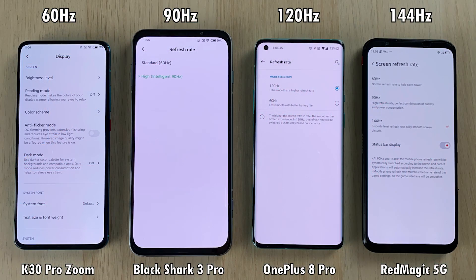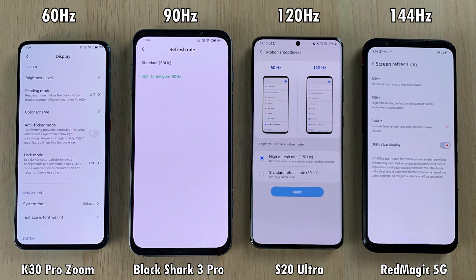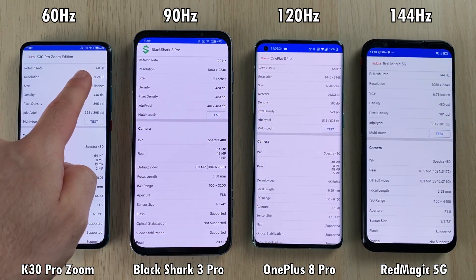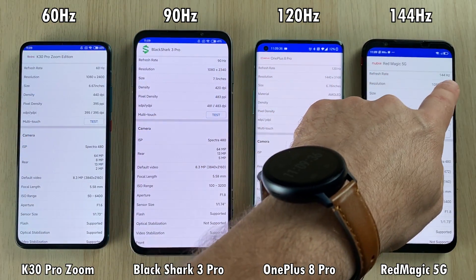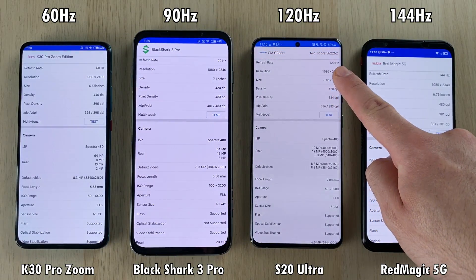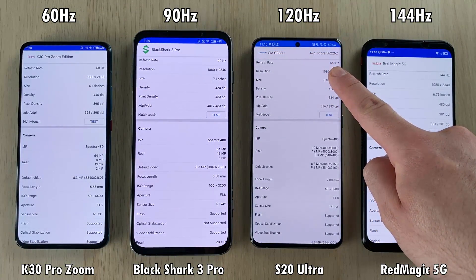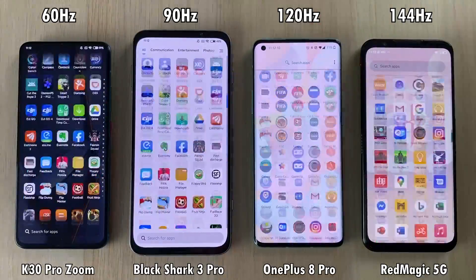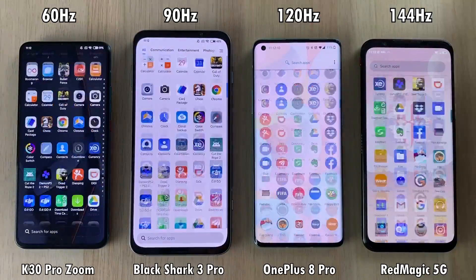We're going to be fluctuating between the OnePlus 8 Pro and the Samsung Galaxy S20 Ultra on the 120Hz side of things, just to get a better perspective since some of the apps used on the S20 and OnePlus at 120Hz don't really work properly, so I'm going to be jumping between those two devices. The other three devices will remain the same throughout the test. We're starting at full 100% — what you're seeing is what I'm seeing.